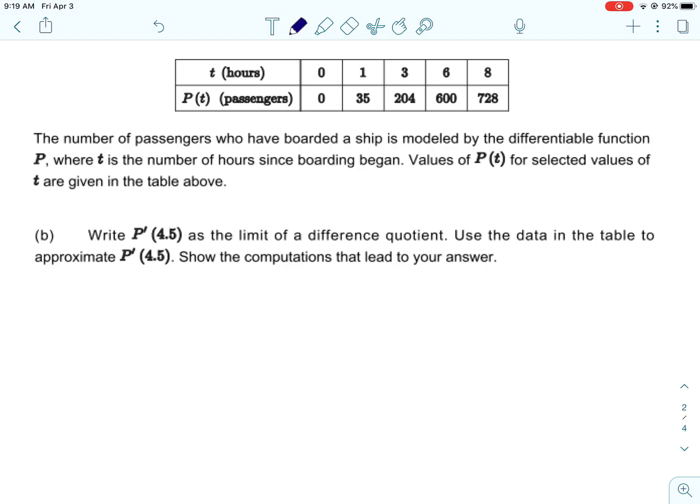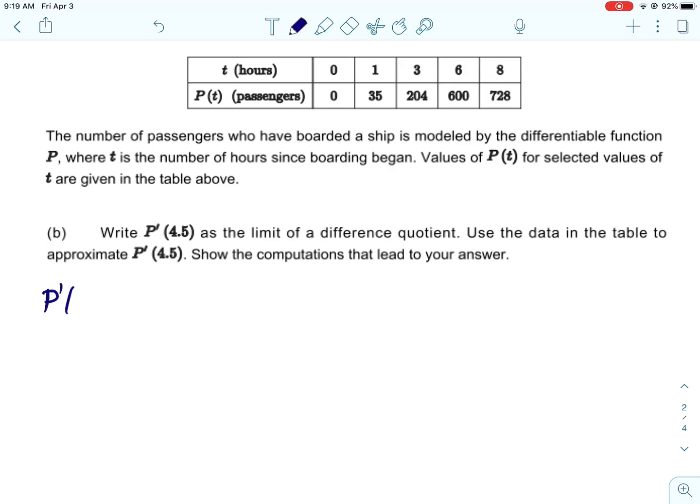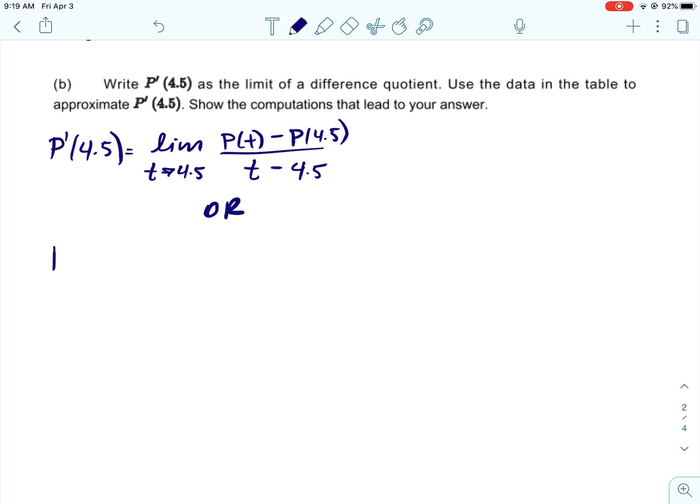Okay, we are going to write p prime of 4.5 as the limit of a difference quotient. Now there are two things, two different difference quotients. So the first one, I'm going to write like the ones we've already practiced on these free response questions. It would be the limit as t approaches 4.5 of p of t minus p of 4.5 over t minus 4.5. So we already did that on a couple of them. That's fine.